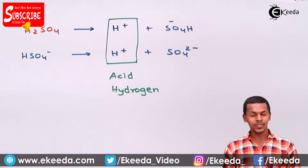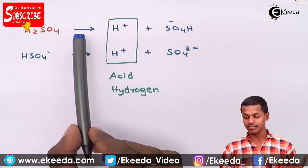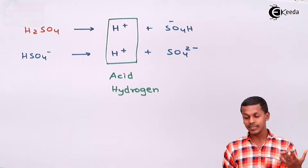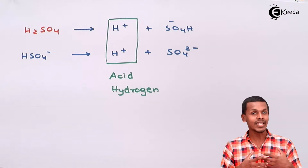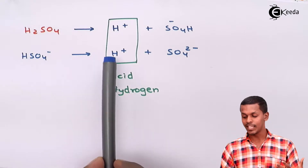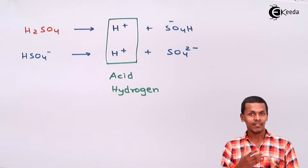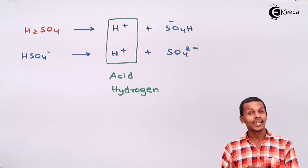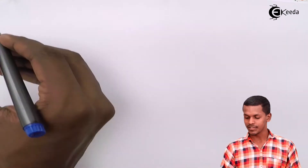It has been observed that the first ionization giving H+ and HSO4- is relatively much easier - H+ is given more readily compared to the H+ given by HSO4- in the second step. Now let us understand the triprotic example, H3PO4 or phosphoric acid.